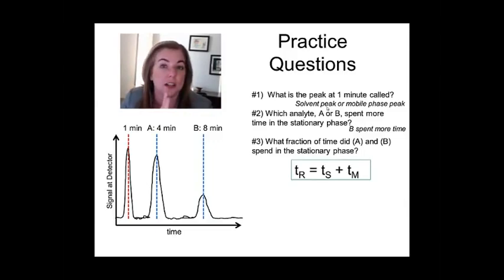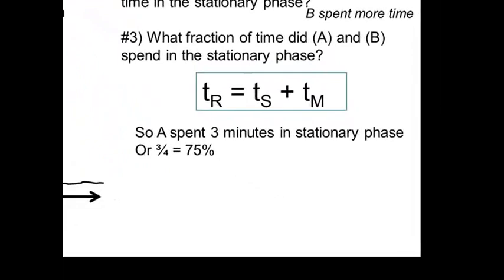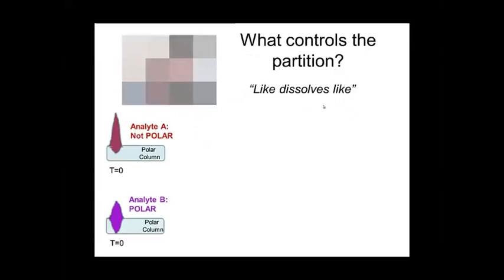Because we know that the retention time, which is let's say eight minutes, is equal to the time that B spent hanging around in the stationary phase plus the mobile phase time, which is the fastest B could have moved through if it had nothing to do with the mobile phase. So, it's a pretty easy calculation then. We just figure out basically how much time they spent in the stationary phase by subtracting from the retention time, the mobile phase. So, for example, A spent one minute in the mobile phase and three minutes in the stationary phase. Hence, it has a retention time of four. Likewise, with B, it spent one minute in the mobile phase and seven minutes in the stationary phase. So, we can calculate of the total time it spent in the chromatography system, what fraction of that time was spent in the stationary phase.